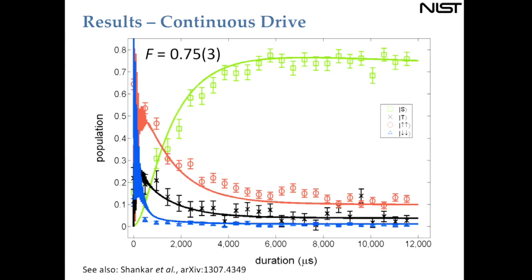The data on the later time side is slightly lower because of coupling to other spin states outside the manifold, causing a slight reduction over a very long timescale compared with the main process. This is why we claim this is really a steady-state production of the singlet state. Similar dissipative entanglement work is being done in superconducting systems at Yale.